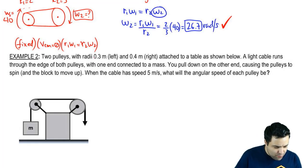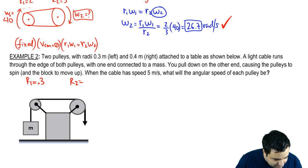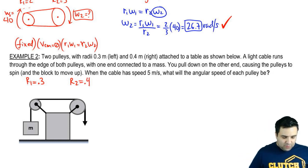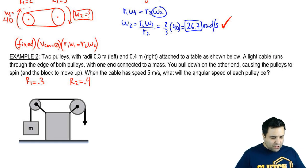All right, so here we have two pulleys with radii 0.3 m (left) and 0.4 m (right). Notice that this one's a little bit smaller, so R1 is 0.3 and R2 is 0.4. Attached as shown, a light cable runs through the edge of both pulleys.